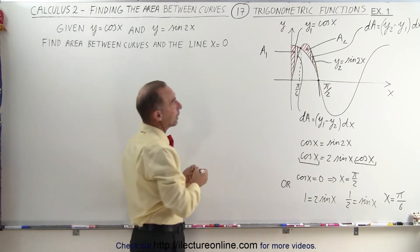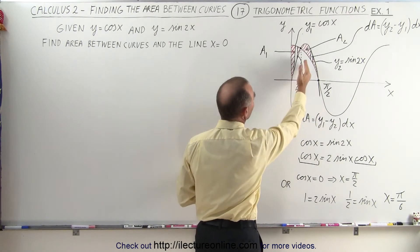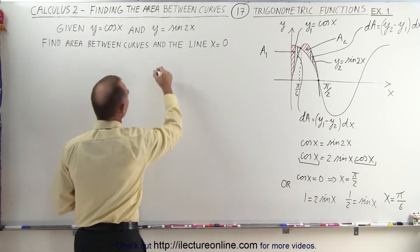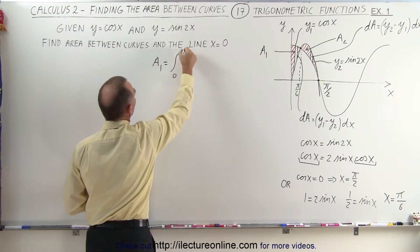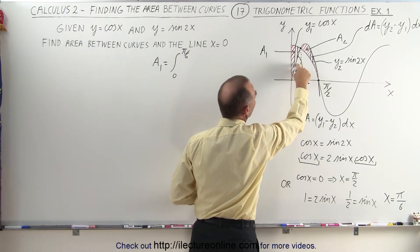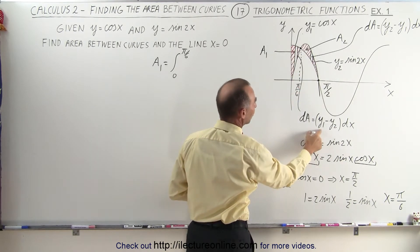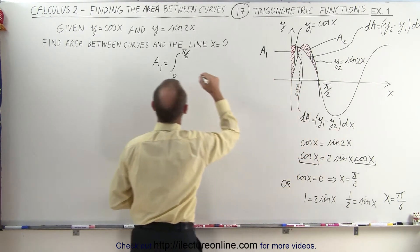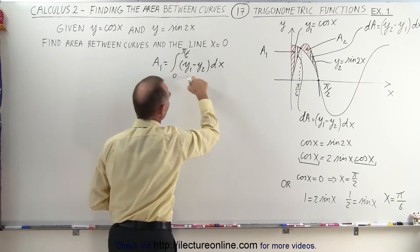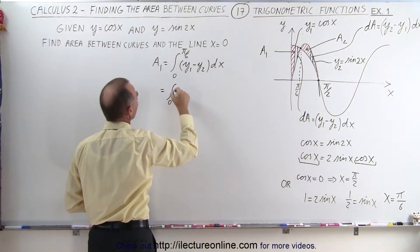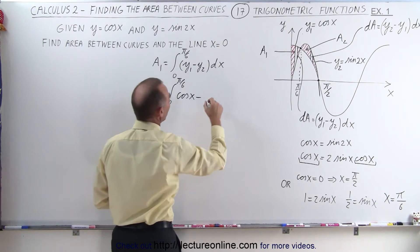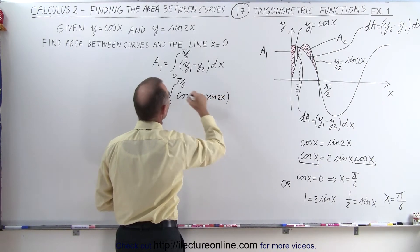The limits of integration for A1 go from 0 to pi over 6. The limits for A2 go from pi over 6 to pi over 2. To find A1, we integrate from 0 to pi over 6 of (y1 minus y2) dx, where dA equals (y1 minus y2) dx. Plugging in, this is the integral from 0 to pi over 6 of (cosine of x minus sine of 2x) dx.